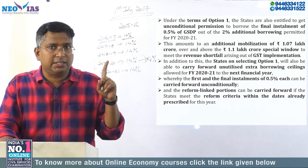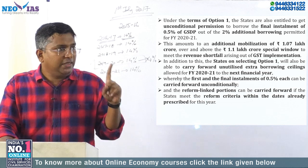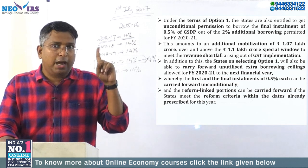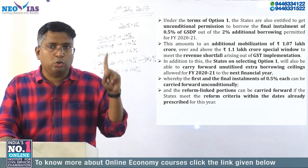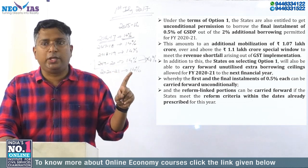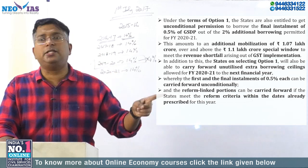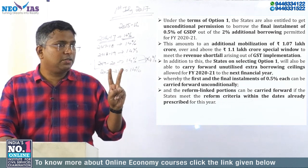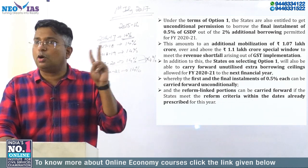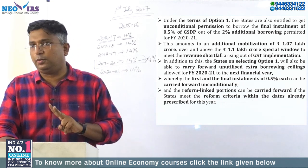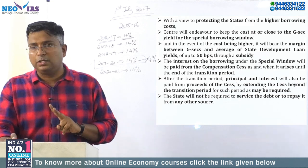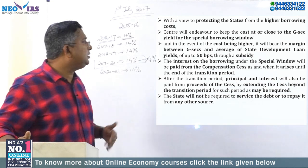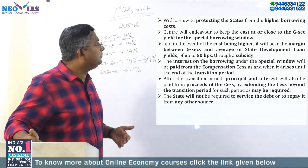To summarize: the first measure is giving the state 2% additional borrowing of their state GDP. The second measure is to address the GST compensation shortfall — compensation to address the GST revenue shortfall.